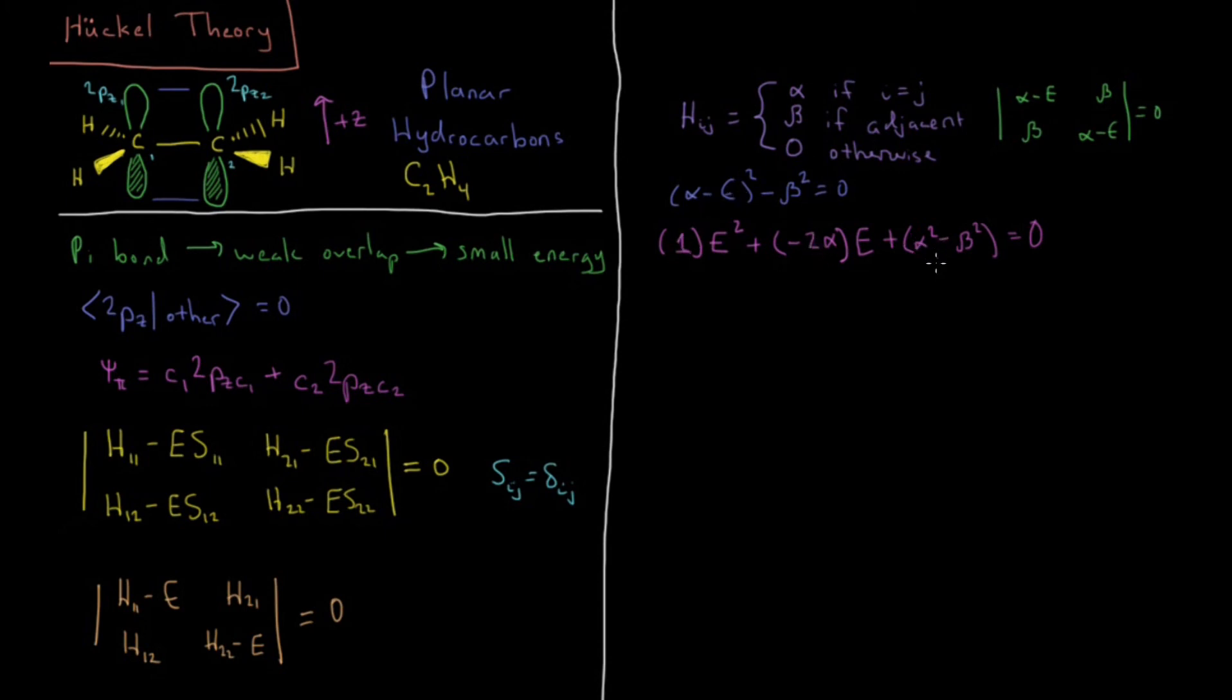That's A, B, and C. Solve the quadratic formula for A, B, and C, and I promise you, if you do that correctly, what you end up getting, solving that quadratic formula, is that E equals alpha plus or minus beta.